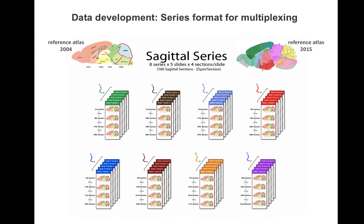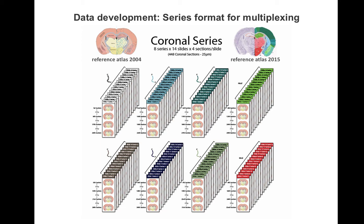Each brain was sectioned into eight experiments, which means eight separate assays were performed on each brain. Therefore, in the sagittal sections, each experiment contains approximately 20 images spanning about half of the brain. The brains used in the coronal experiments were sectioned in a similar fashion, resulting in 50 to 60 slides per experiment in this plane.